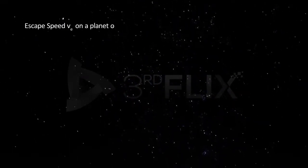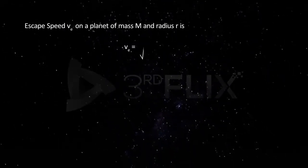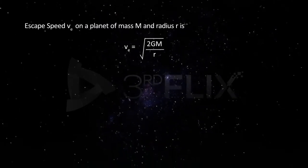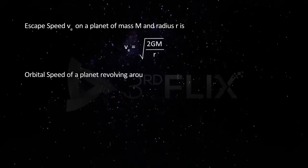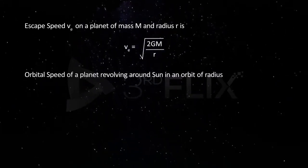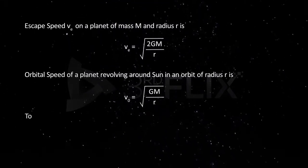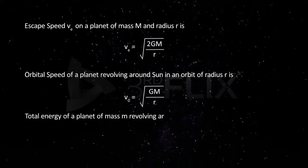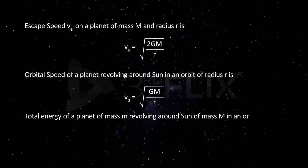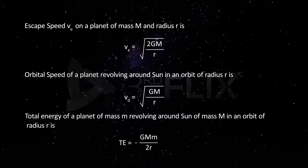Summary: Escape speed vₑ on a planet of mass M and radius r equals √(2GM/r). Orbital speed on a planet revolving around the Sun in an orbit of radius r equals √(GM/r). Total energy of a planet of mass m revolving around the Sun of mass M in an orbit of radius r equals −GMm/(2r).